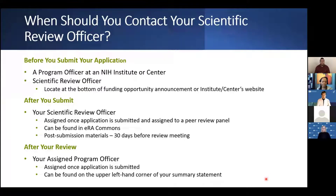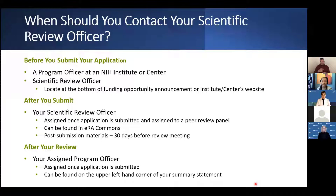After you submit your application, applicants often want to submit post-submission materials, and you submit those to your scientific review officer as well. Once the review is completed and you have received your summary statement, you then refer any questions to your assigned program officer. You will be able to see who your assigned program officer is by looking at the upper left-hand corner of the first page of your summary statement.